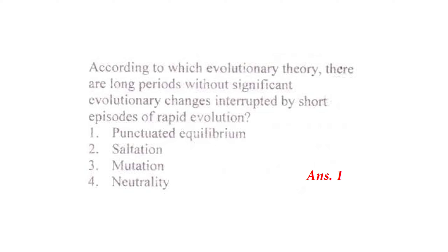Next: according to which evolutionary theory are there long periods without significant evolutionary changes interrupted by short episodes of rapid evolution? The right answer is option 1 – punctuated equilibrium. This theory describes long periods of stasis interrupted by short episodes of rapid evolution.